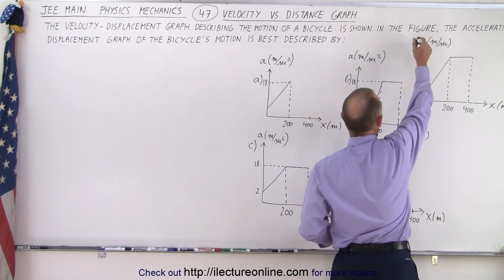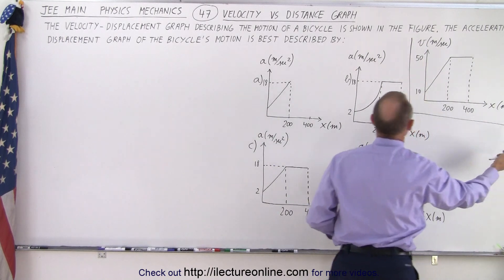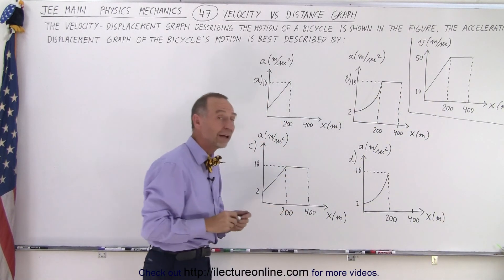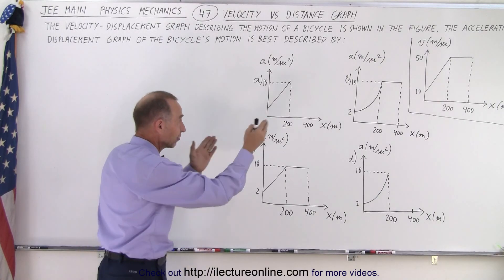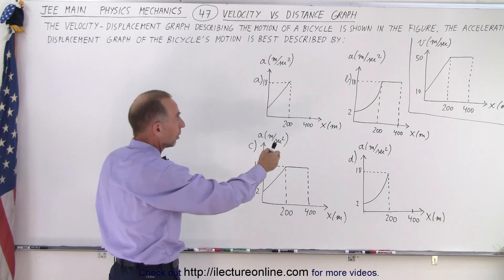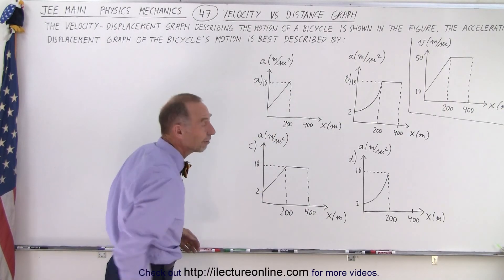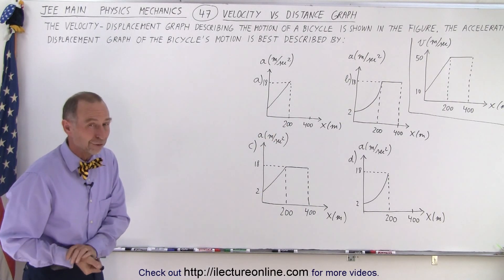So here we have the graph that we start with and then we're going to convert it to an acceleration versus displacement graph and we're asked to find the right conversion. Which of these four represents the acceleration versus displacement of that velocity versus displacement graph?